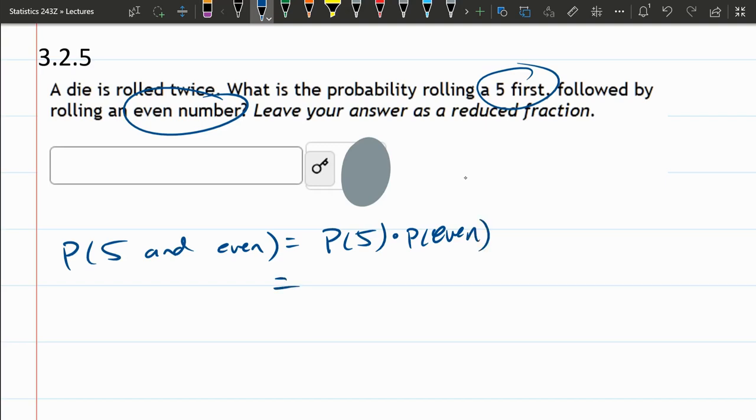Now there's six outcomes total. Probability of 5 - there's one 5 you can roll out of 6 total.